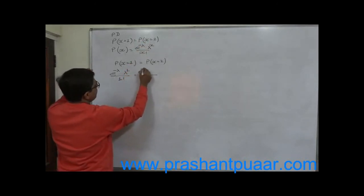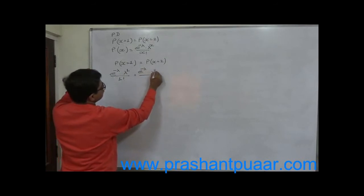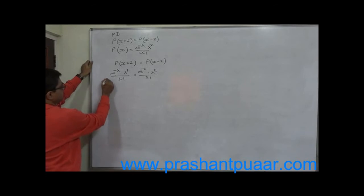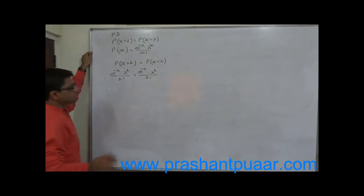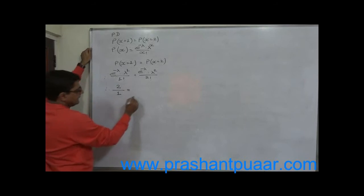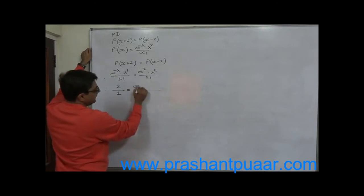Similarly, if we want to calculate probability of 2, it will be e raise to minus mean into mean raise to 2 upon 2 factorial. Now just cross multiplication type of calculation: 2 factorial means 2 divided by 1 factorial means 1 equals to e raise to minus mean into mean raise to 2 divided by...